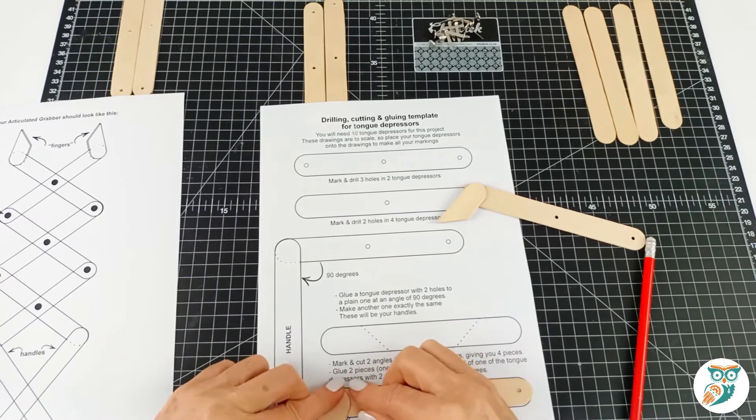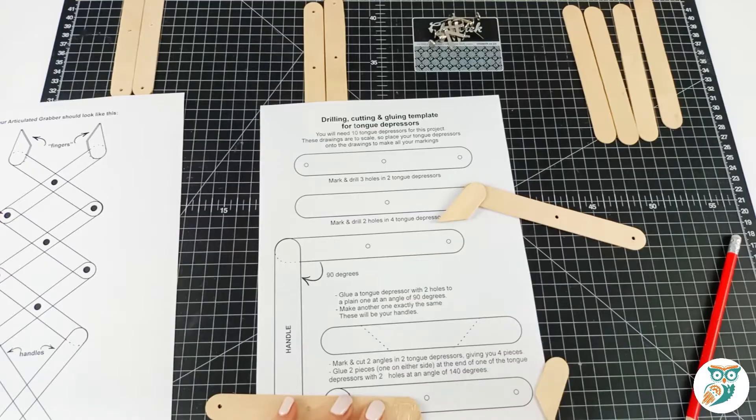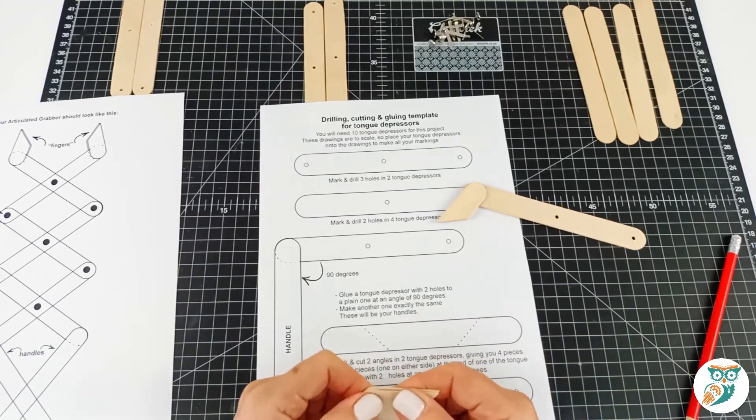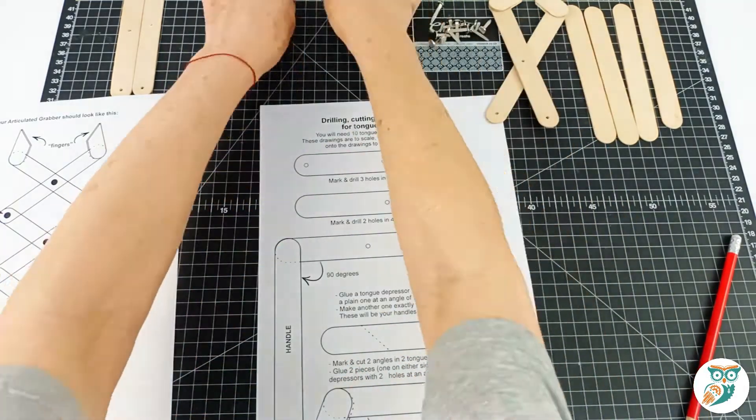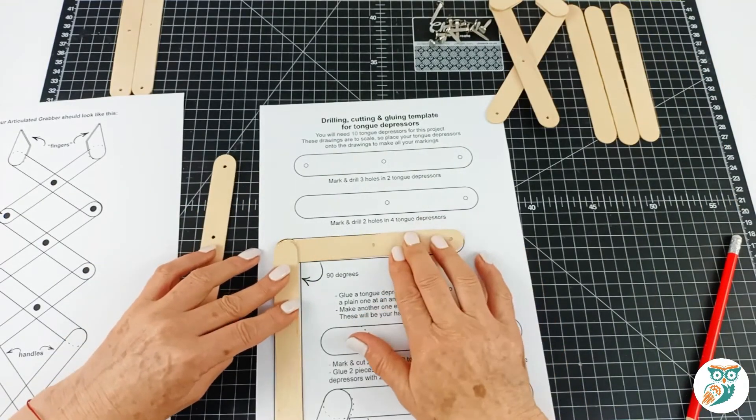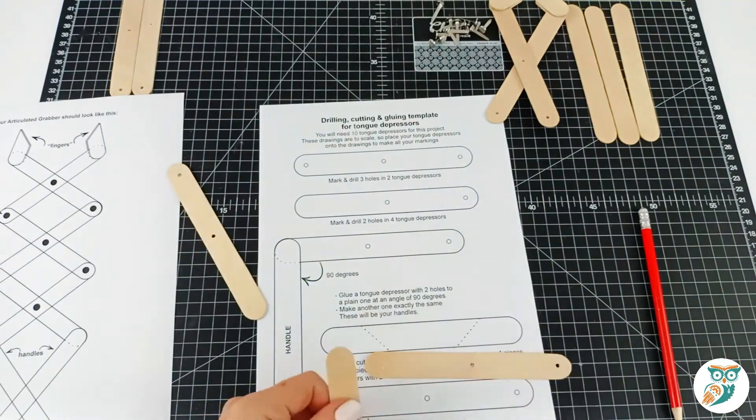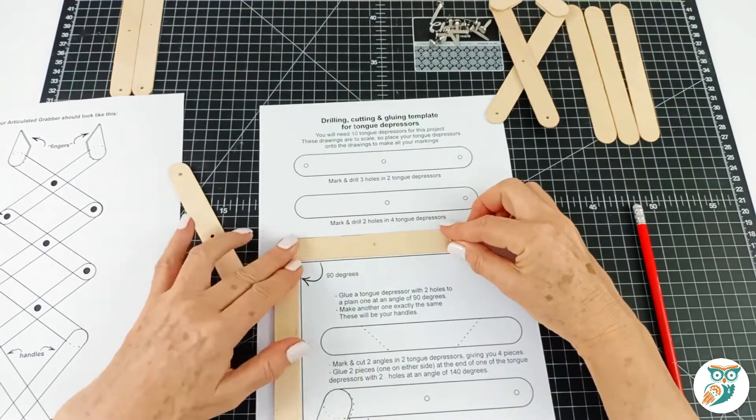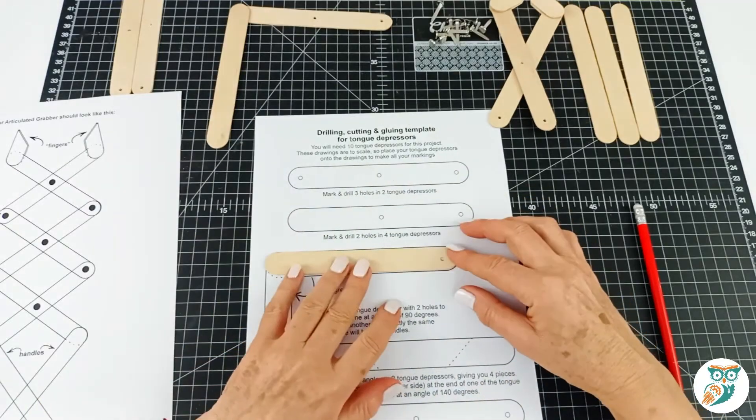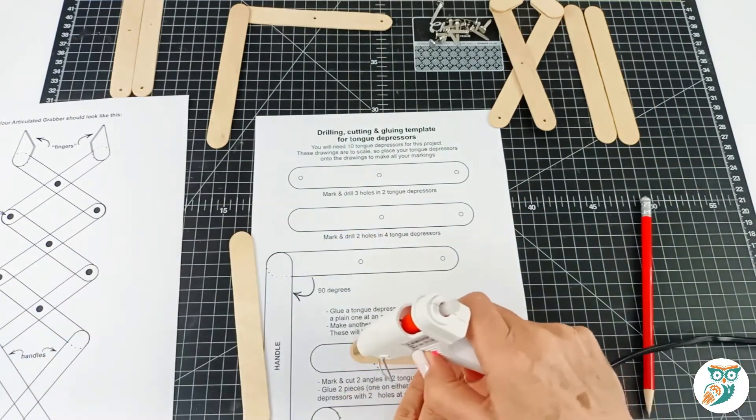And we're just using a pencil to make sure that we keep everything at the right angle. Again, the angles are really important on this project so it really helps to make sure that that is done correctly. So there's our two arms with our little fingers on the end. And now we're going to do a right angle and we're going to use one pre-drilled piece that's got two holes drilled in it and one craft stick that does not have any drill points in it. And that's going to be our handle.